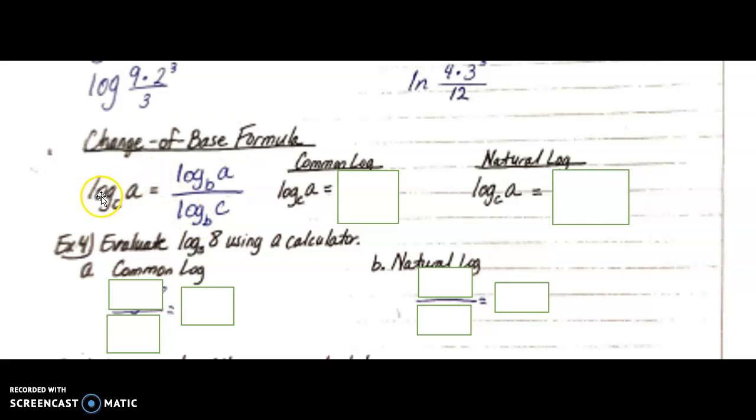What you end up doing is you take log base B—B would be your new base—so log base B of A from here, divided by log base B of C, your original base. So log base C of A becomes log base B of A divided by log base B of C. A stays where it is, and your old base now becomes what you're taking the log of on the bottom.